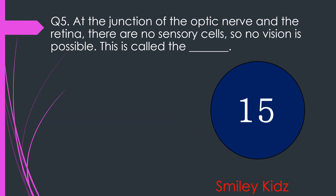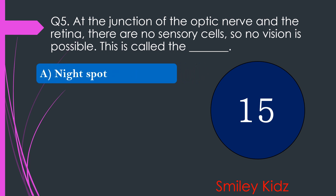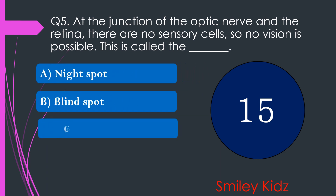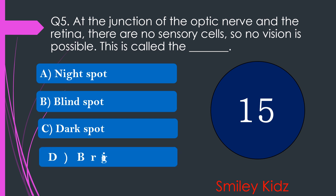Question number 5. At the junction of the optic nerve and the retina, there are no sensory cells. So, no vision is possible. This is called the dash. The options are A. Night spot, B. Blind spot, C. Dark spot, or D. Bright spot. Your time starts now.